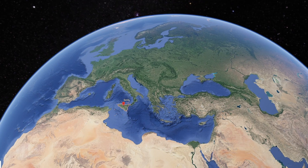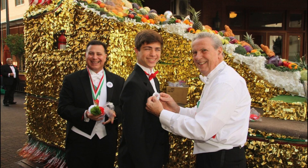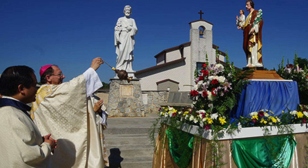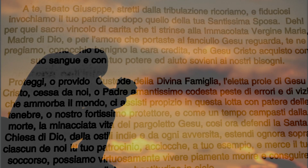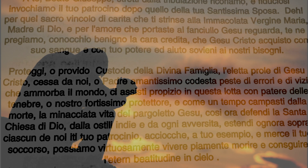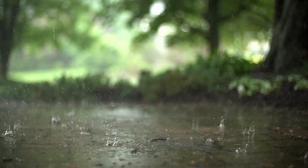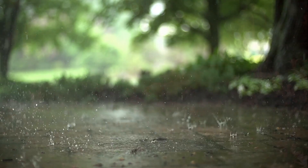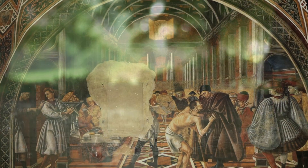In Sicily, where St. Joseph is regarded by many as their patron saint, and in many Italian, American, and Canadian communities, thanks are given to St. Joseph for preventing a famine in Sicily during the Middle Ages. According to legend, there was a severe drought, and the people prayed for their patron saint to bring them rain. They promised that if God answered their prayers through Joseph's intercession, they would prepare a large feast to honor him. The rain did come, and the people of Sicily prepared a large banquet. The fava bean was the crop which saved the population from starvation, and is a traditional part of St. Joseph's Day altars and traditions. Giving food to the needy is a St. Joseph's Day custom.